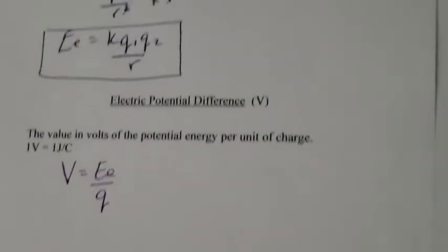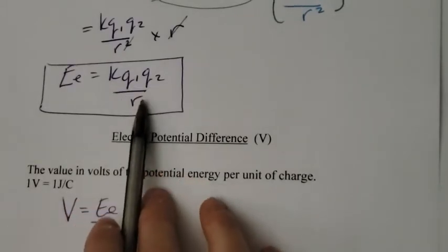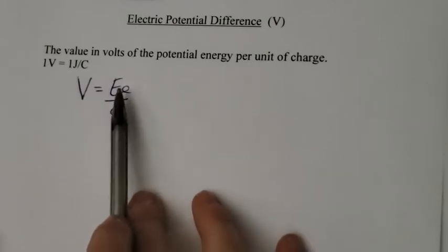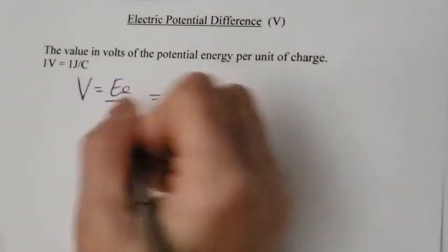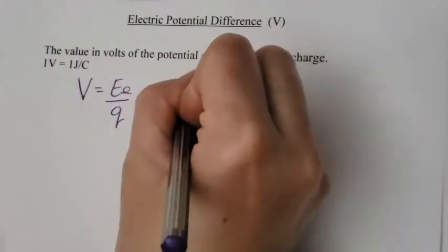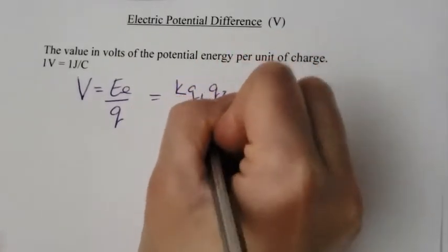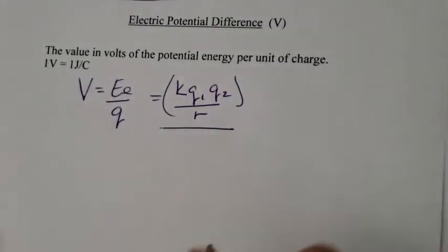We just found out this formula for electrical energy, which is KQ1Q2 divided by R. So what I'm going to do is put that in here. Instead of the EE, I'm going to write KQ1Q2 divided by R. So that's my numerator, and the whole thing is divided by this Q.